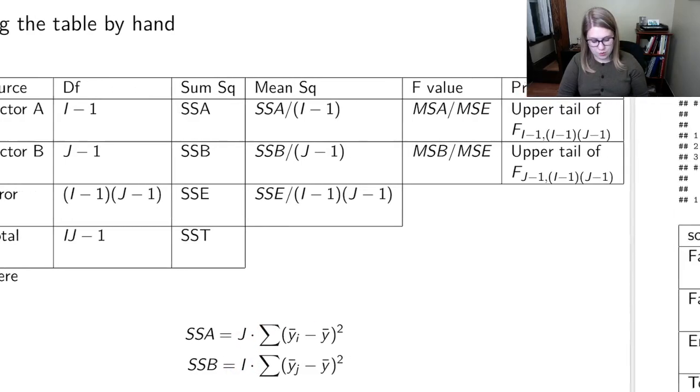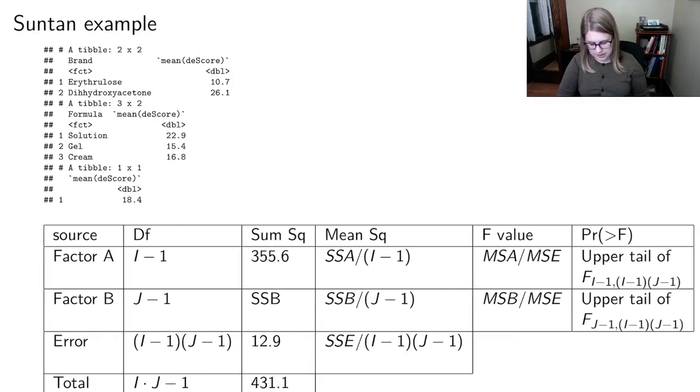So let's make it more concrete by doing that suntan example. So I think I was doing brand as factor A and formula as factor B. And so that means that I have two groups minus one is one degree of freedom there. Here I have three groups. I have the solution, gel, and cream.